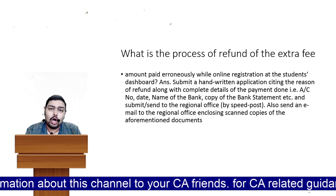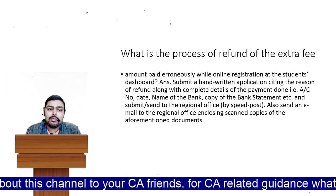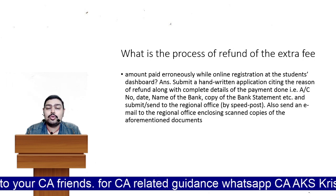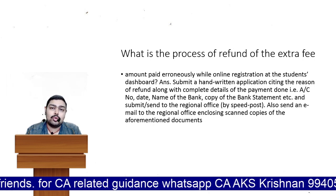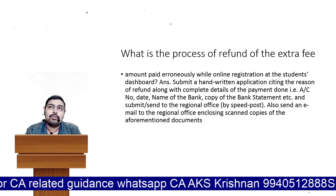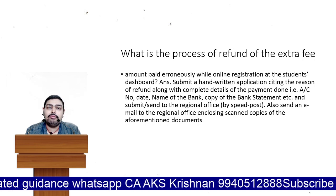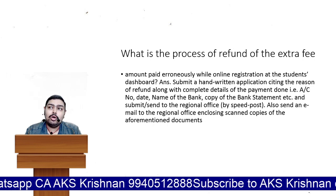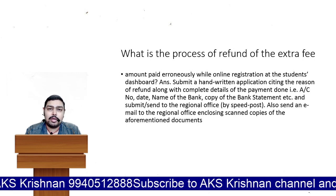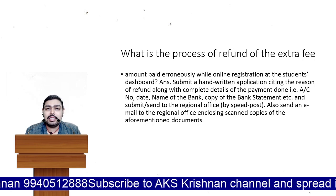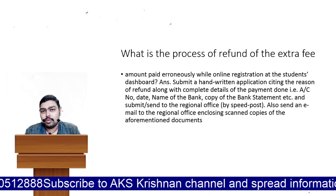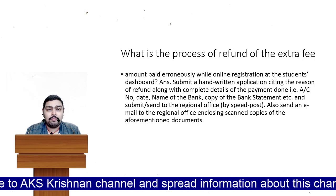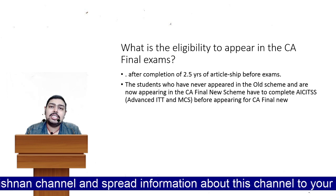If you paid any extra amount, how do you get a refund from ICAI? You have to write physically — a hard-copy letter in handwriting — with your account details, name of bank, and bank statement, then send it by speed post to the regional office. You can also go to the nearby regional office and give a letter. For example, if someone filled the Foundation form instead of the Direct Entry form by mistake and wants to cancel, they won't allow cancellation. But if extra fees were deducted twice, that amount will be refunded.